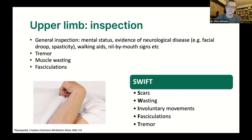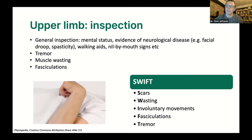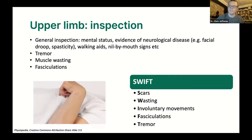You might spot a tremor suggestive of Parkinson's disease — normally a rest tremor, unilateral, described as a pill-rolling tremor affecting the upper limb more than lower. Or other involuntary movements such as Huntington's chorea — more unpredictable, rapid involuntary movements affecting the limbs. So involuntary movements or a tremor can give the diagnosis away just on inspection.